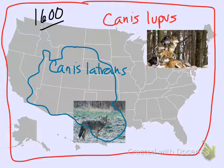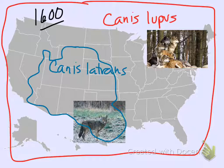Coyotes are kind of specialized — they're kind of a western thing. The range map I'm drawing is the best I can do off the top of my head. There were coyotes on the northern plains for the most part. They were a plains and desert species. But they definitely didn't live in the forests of the East.